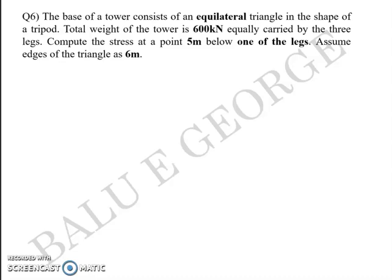Now this problem is an application of the Boussinesq equation. You are given the base of a tower which is an equilateral triangle in the shape of a tripod. The total weight of the tower is 600 kilonewtons, equally carried by the three legs. You are asked to compute the stress at a point 5 meters below one of the legs, assuming the edges of the triangle as 6 meters.